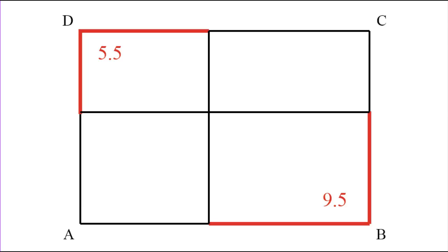The top side of the smallest rectangle and the bottom side of the largest rectangle add up to the length of rectangle ABCD, and the left side of the smallest rectangle and the right side of the largest rectangle add up to the width of ABCD. So the red lines in our diagram represent the sum of the length and width of rectangle ABCD — one half of its perimeter. Since one half of the perimeter is 5.5 + 9.5 = 15, the perimeter of ABCD is 30.